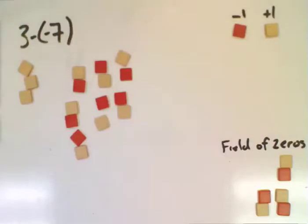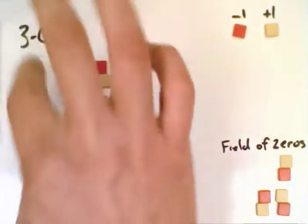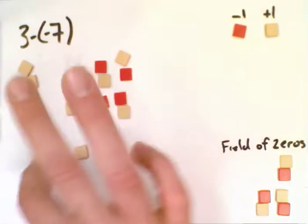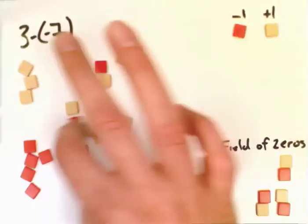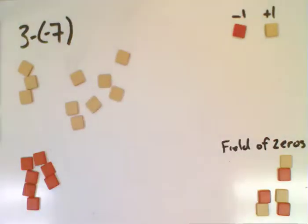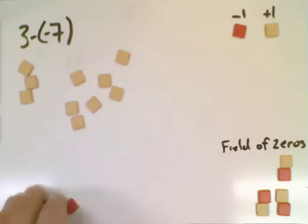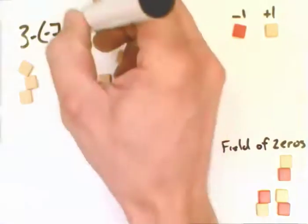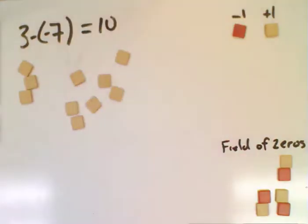And now I can actually subtract my negative 7. And so I don't take away my positives. I take away my negatives. So there's 1, 2, 3, 4, 5, 6, 7. And so it turns out I brought in just enough zeros that I needed in this case. And so I remove those 7. They're gone, the negative 7. And what do I have left? I have 10 of the positive tiles left. And I've done my subtraction of a negative. Without memorizing a rule of two negatives make a positive or vice versa, we're actually using the same concept of taking away from a field of zeros.